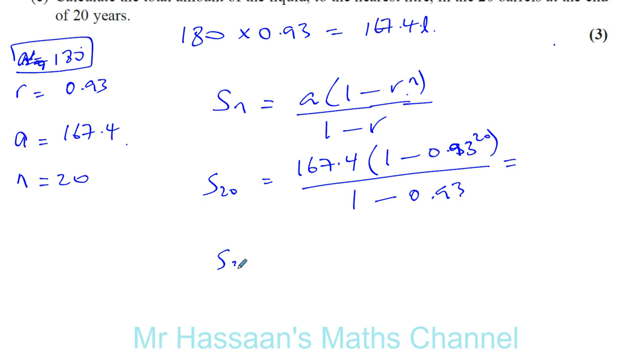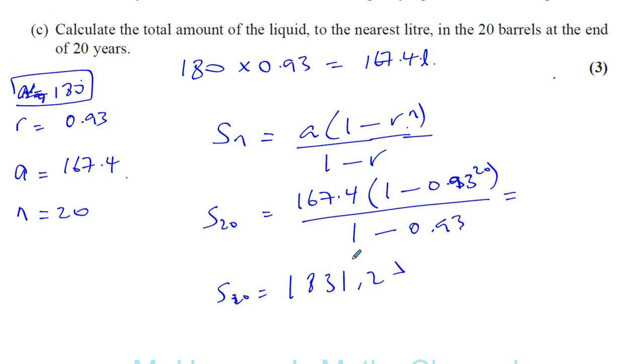And that will give us 1831.26, to the nearest litre, so that's going to be 1831 litres. There's the answer to that question.